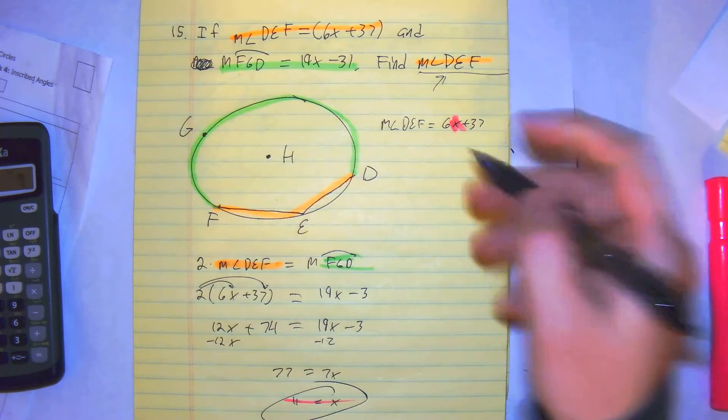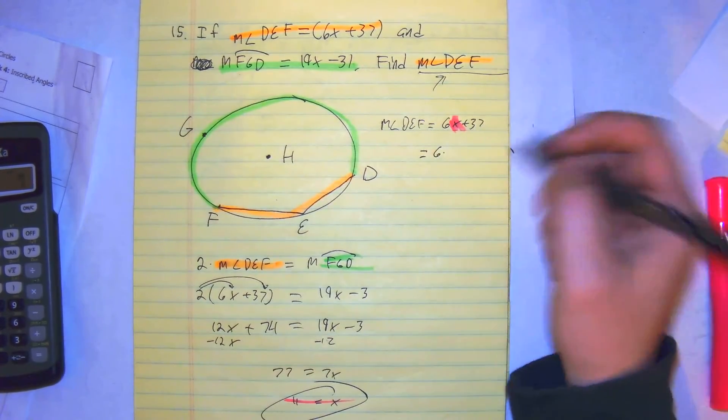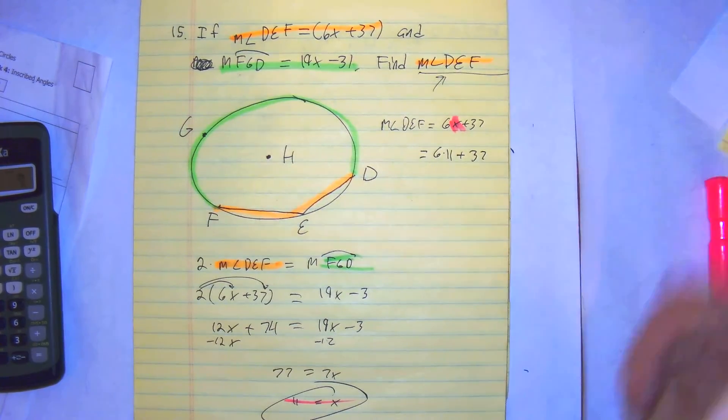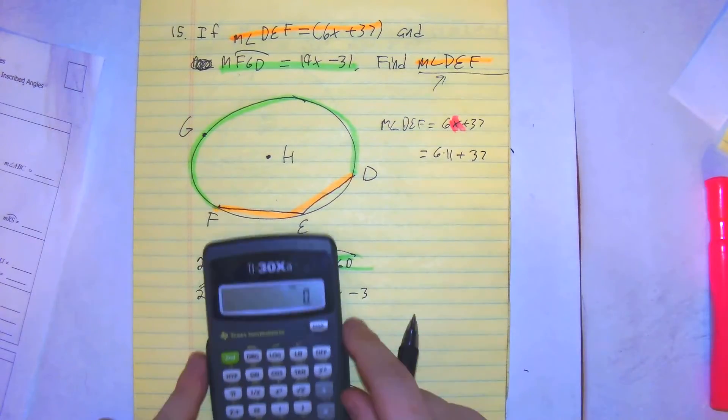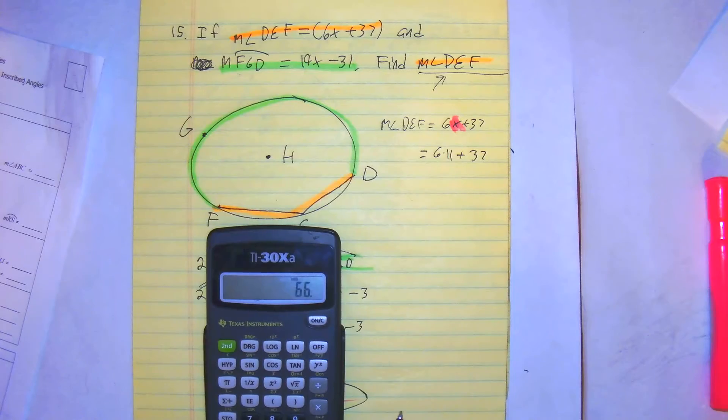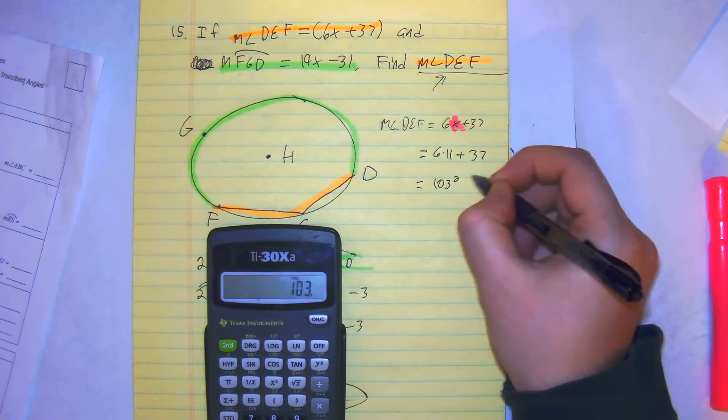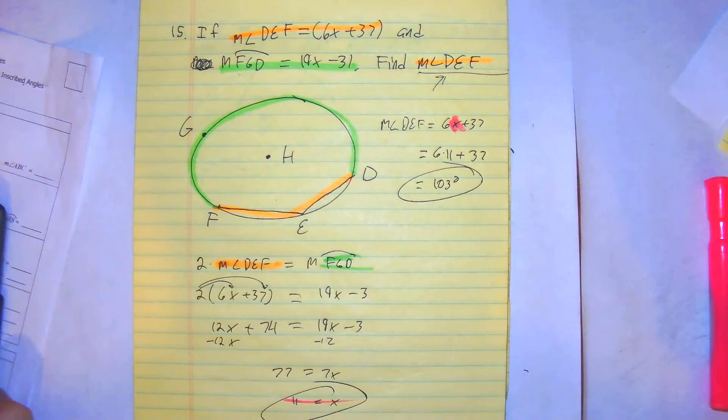So right here, this is equal to 6 times 11 plus 37. 66 plus 37 gets you 103 degrees. And there you have it. That's number 15.